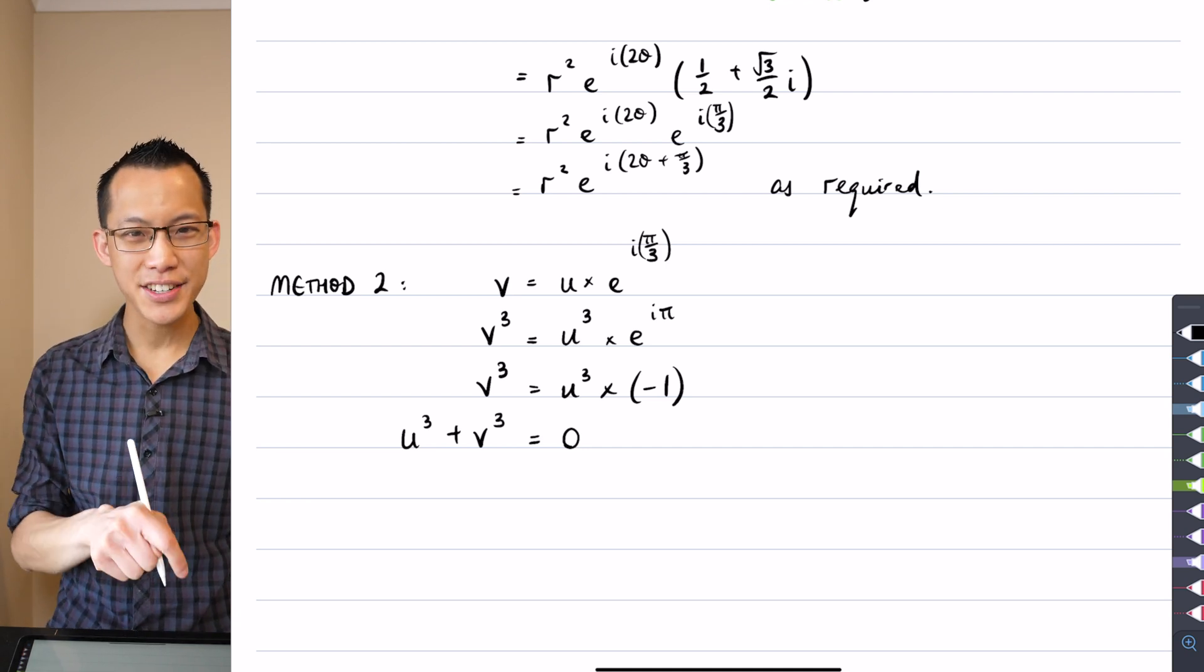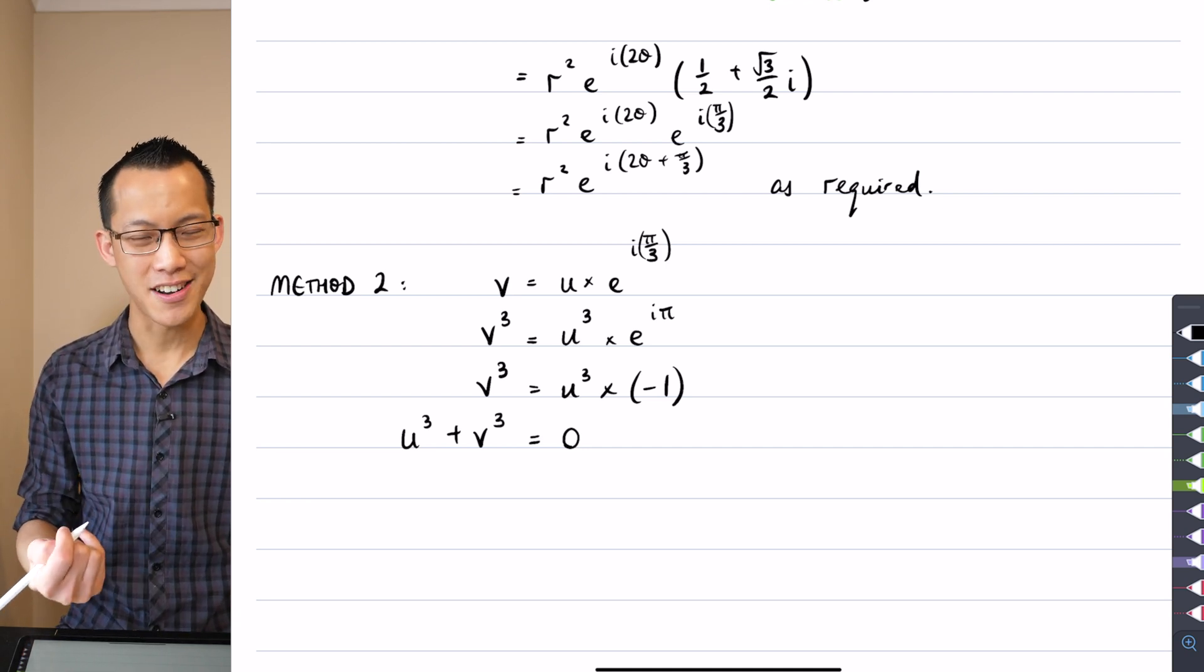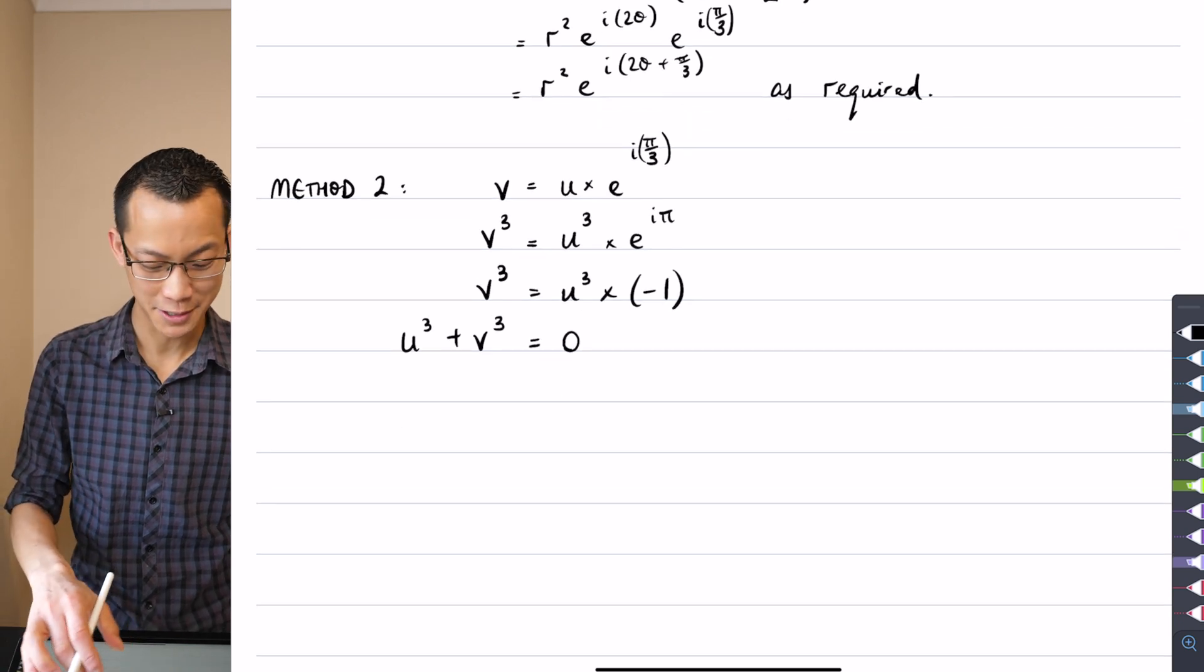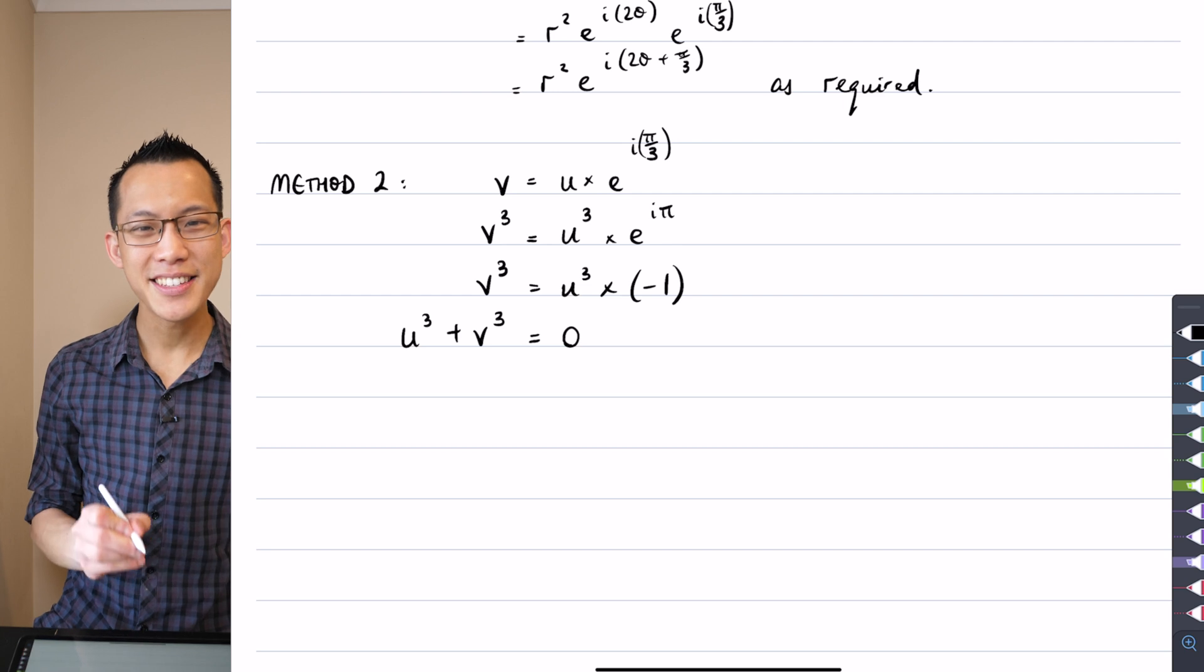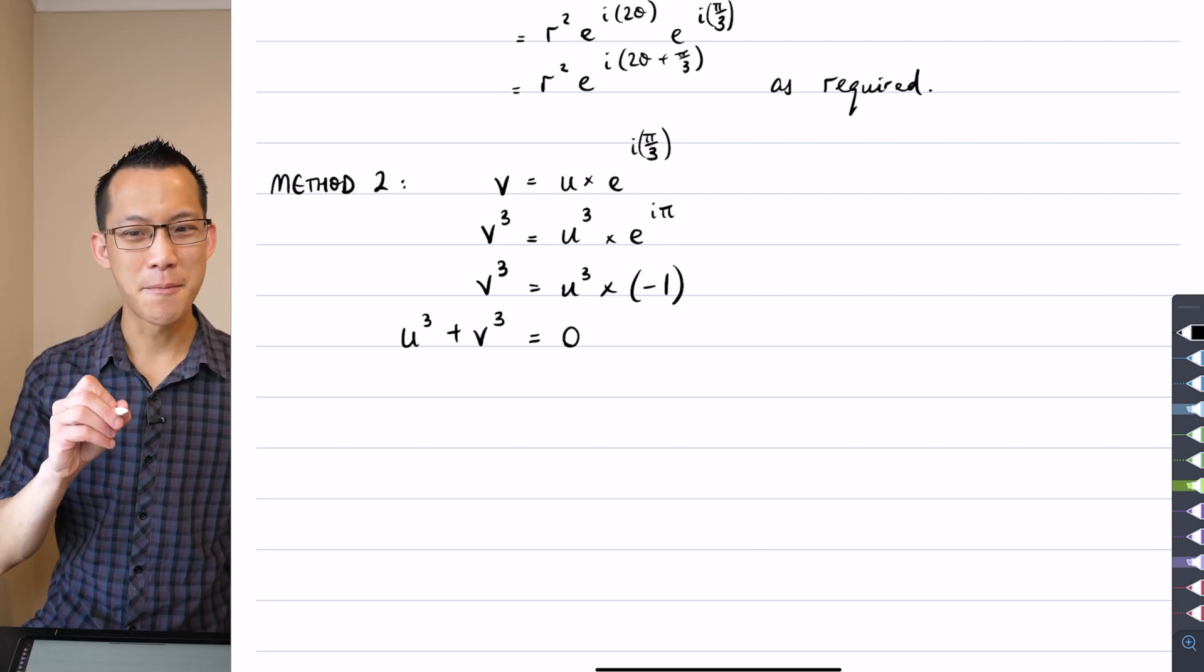And in fact, this is part of that famous Euler's identity that we looked at. So therefore, I'm just getting V cubed equals U cubed times negative one. So it's negative U cubed on the right hand side. So I'm going to add U cubed to both sides, which gives me this U cubed plus V cubed.